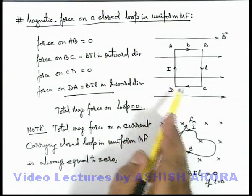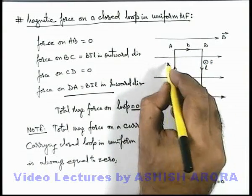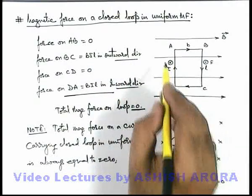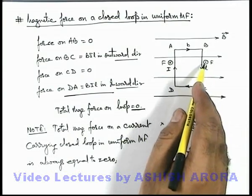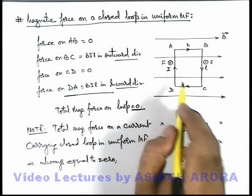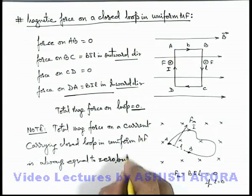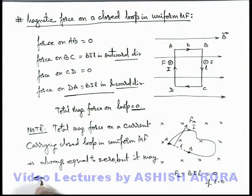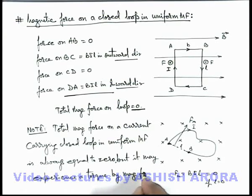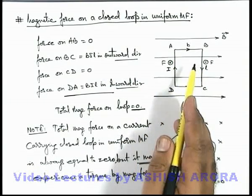However, one more thing to note: wire BC experiences a force in the outward direction and wire DA experiences a force in the inward direction. The magnitudes are equal so total force is zero, but the lines of action of these forces are not in the same line. These two forces produce a couple, and so the coil may experience a torque by magnetic force. It may not always produce torque — if the lines of action of the two opposite forces coincide, torque may also be zero. Magnetic torque will be discussed in detail in the next section.